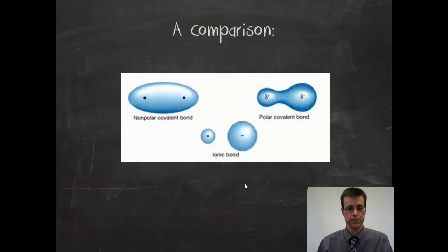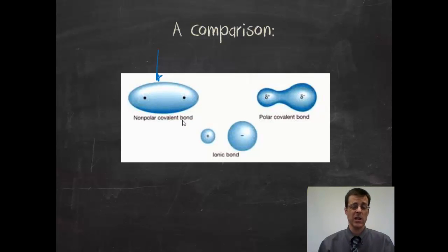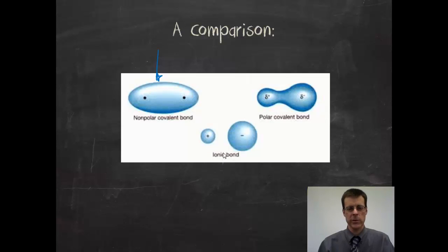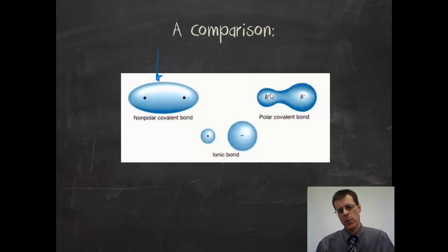Comparing the three types of bonds: the nonpolar covalent bond has electrons shared equally — you can see the electron density evenly shared around the atoms. The ionic bond involves an electron transfer, so the two ions are separate with no overlapping orbits and no sharing of electrons, just attraction due to opposite charges. The polar covalent bond is somewhere in the middle — there's a partial positive charge on one side, a partial negative on the other, but there is still electron sharing and orbital overlap, with one atom pulling the electrons closer to itself.